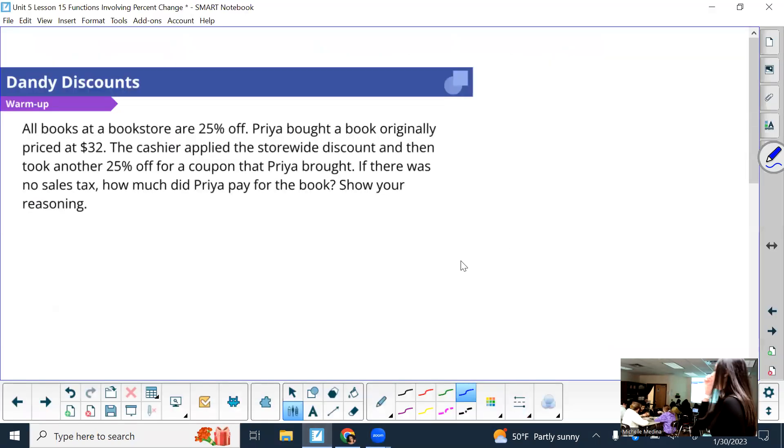All right. So now going over the warm up. Don't necessarily tell me the final answer. Just answer the question I'm asking. All books at a bookstore are 25% off. Priya bought a book originally priced at $32. The cashier applied the store discount and then took another 25% off for a coupon that she brought. If there was no sales tax, how much did she pay for the book? So don't tell me what she paid for the book. Just tell me what would be like the first step in solving this. Nothing? So you think it's 50% off total that she's getting? It is not. Very common to say.